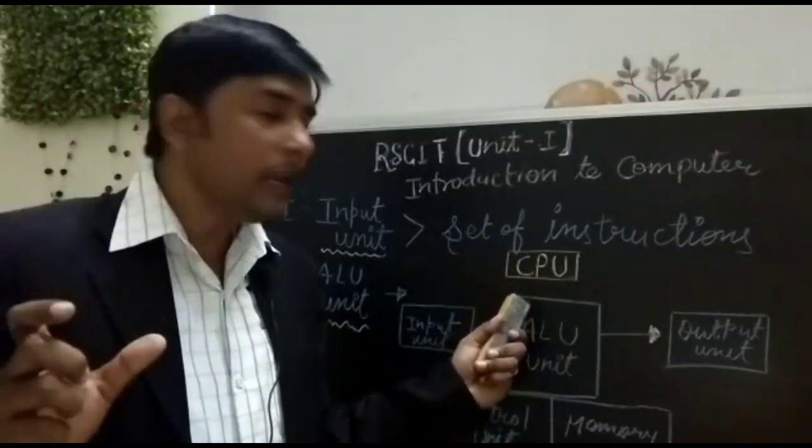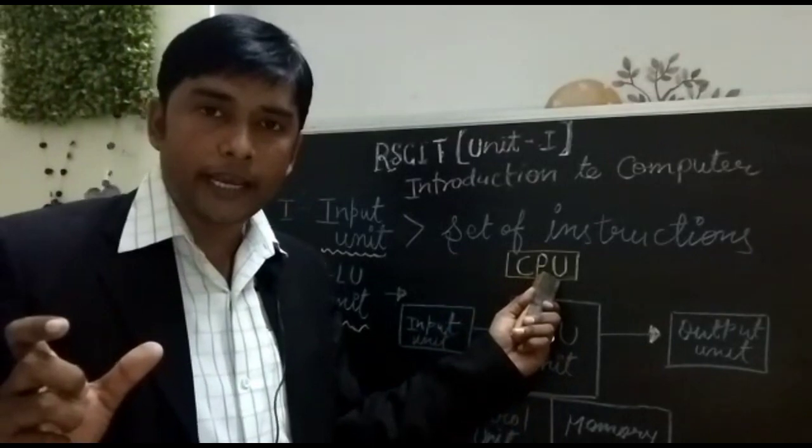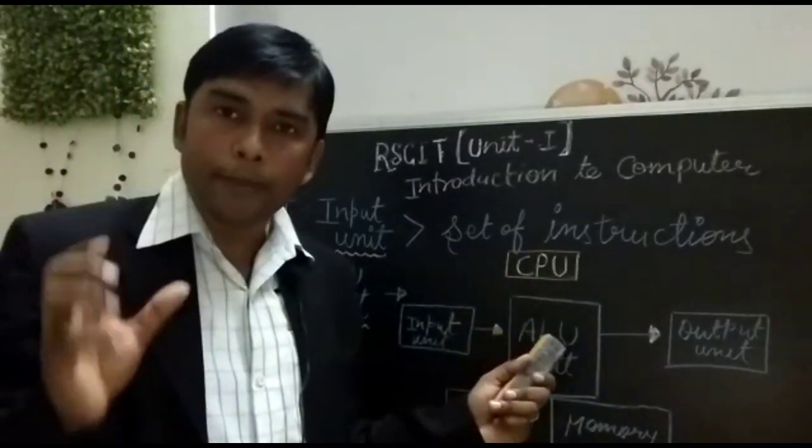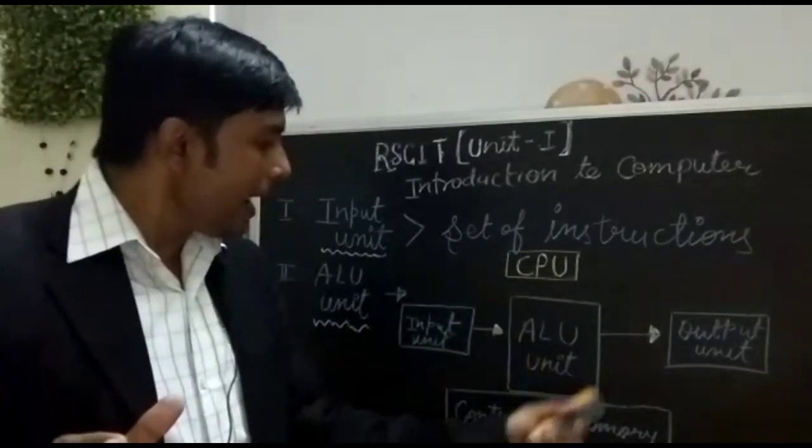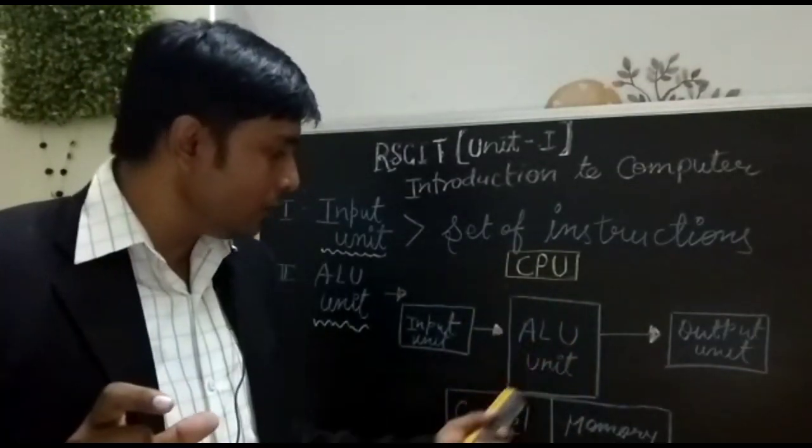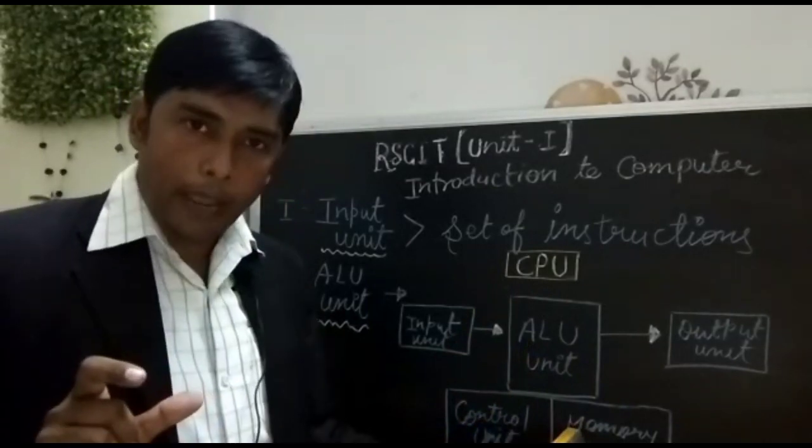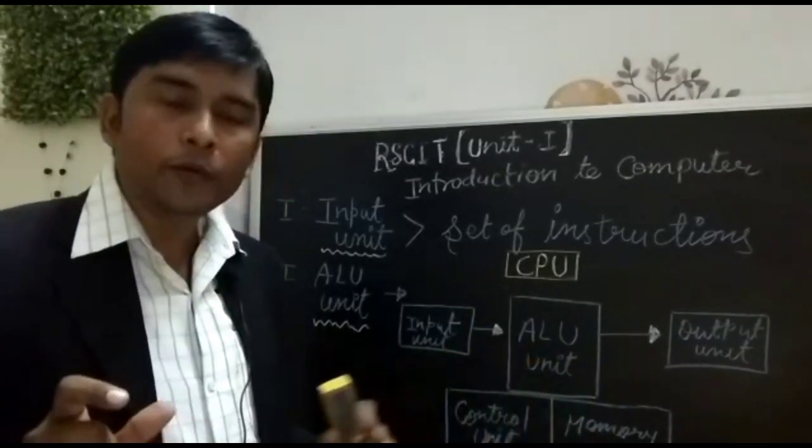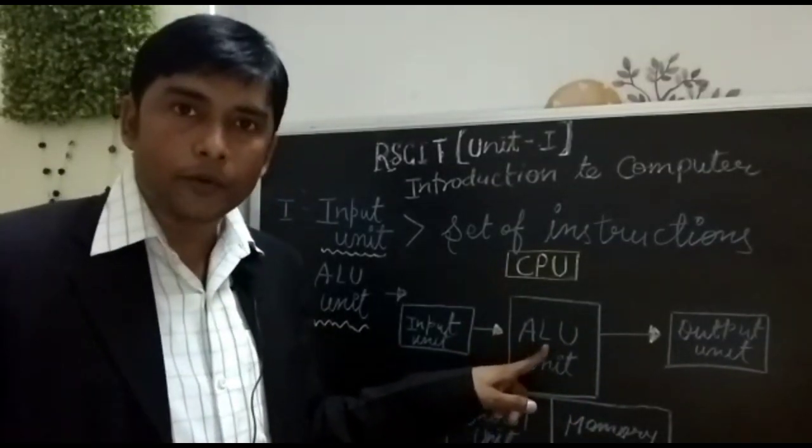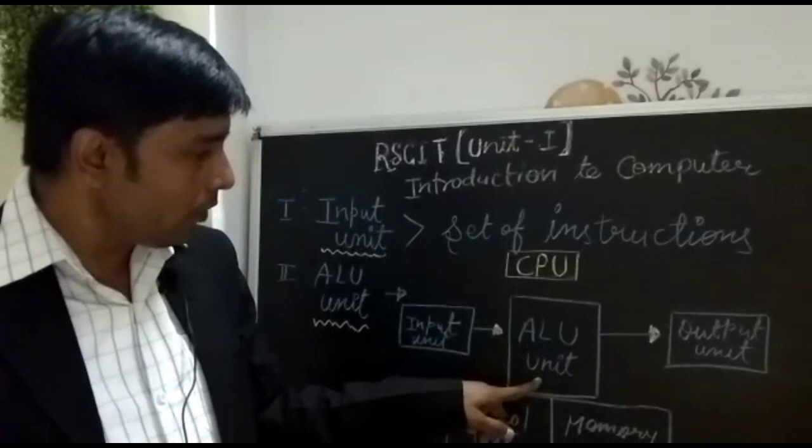And the CPU, the central processing unit. Guys you can see that the central processing unit, the brain will have the 3 major units, like I have already told you in detail, ALU unit, control unit and memory unit. First of all, ALU unit, which stands for arithmetic and logical unit.